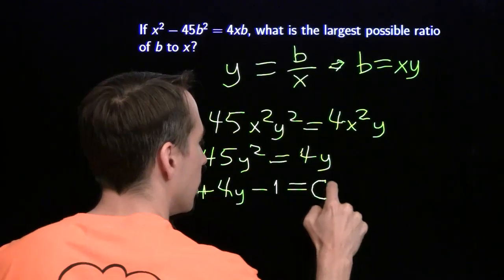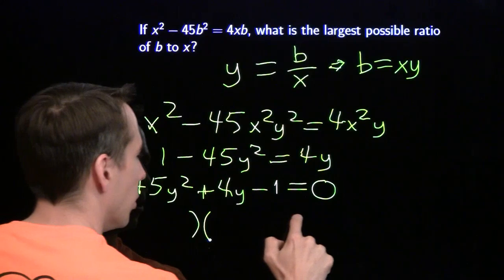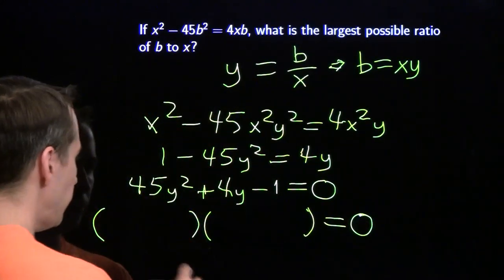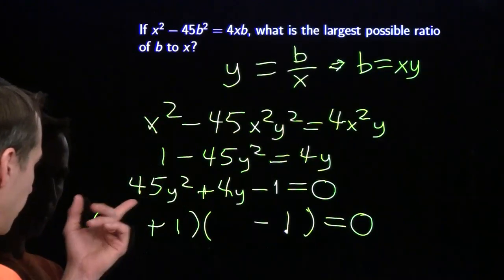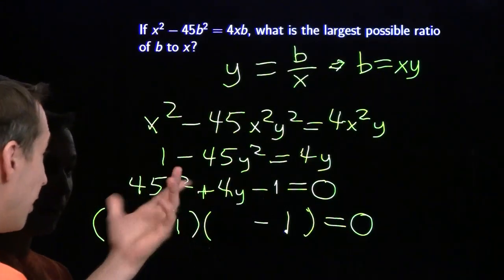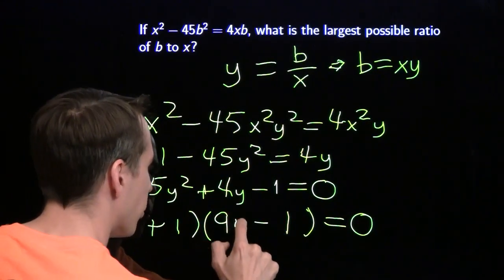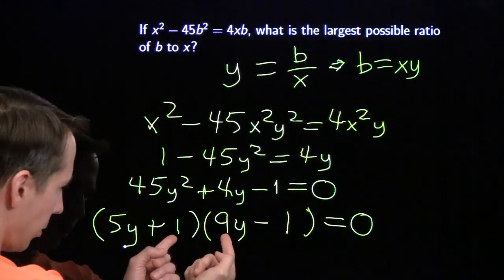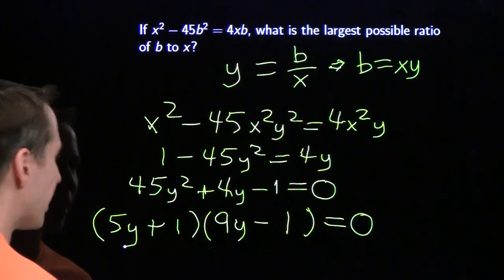We'll bring all the terms over to one side, and then we'll factor. We have 45y squared plus 4y minus 1 equals 0, and we can factor this. We know that the constant terms have to multiply to negative 1, so we'll put a plus 1 here, minus 1 there. We want the y terms to multiply out to 45. Obvious choice: 9 and 5. The difference of those is 4. So we're going to put the 9y right there and the 5y right over here, so we have our factorization.